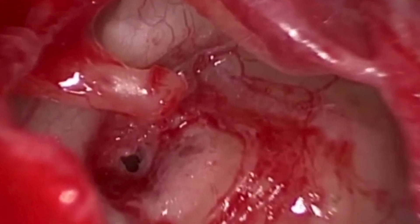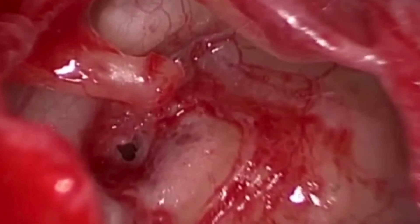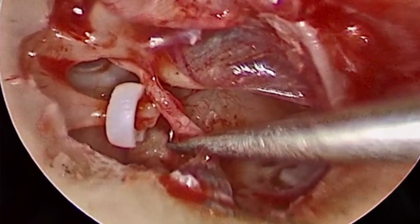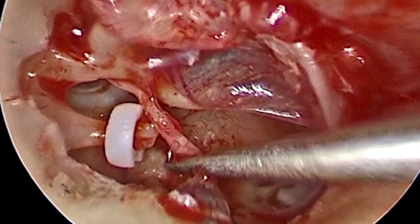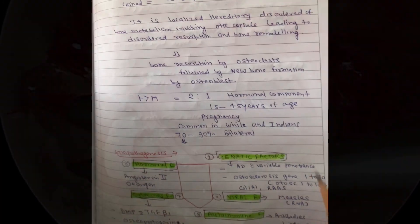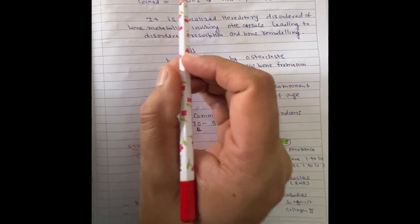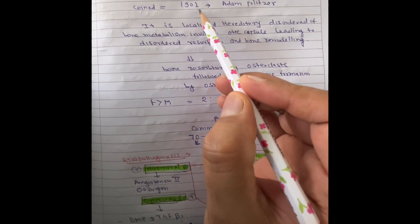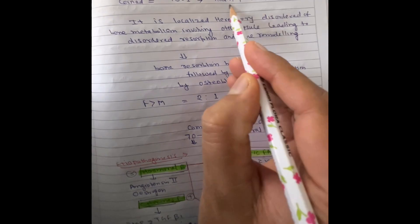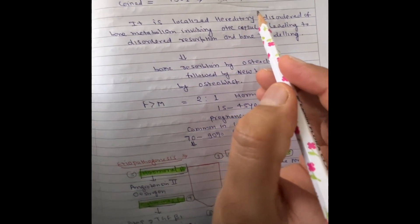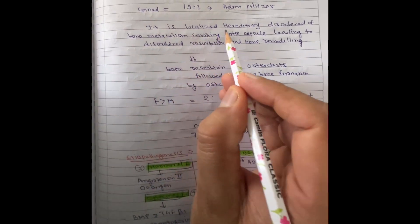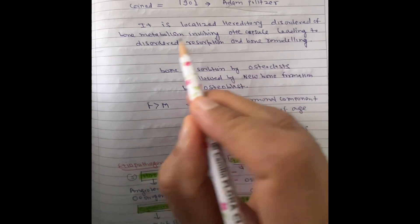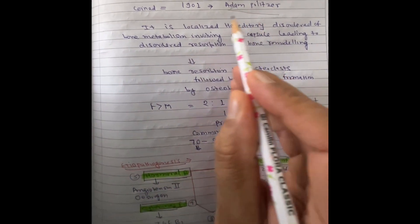This topic is about otosclerosis. You can see the fenestration station, the oval window, and the piston over the incus. This is the chorda tympani. What is otosclerosis? The term 'otosclerosis' was given by Adam Politzer in 1901. He was the leading otolaryngologist of his time.